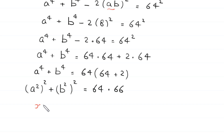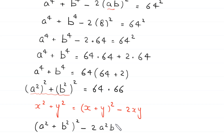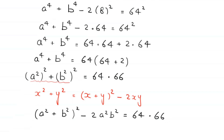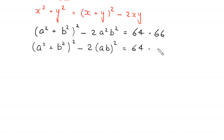Now by using the algebraic identity x squared plus y squared equals x plus y whole squared minus 2xy, this a to the power 4 plus b to the power 4 — written as a squared whole squared plus b squared whole squared — becomes a squared plus b squared whole squared minus 2a squared b squared, which equals 64 times 66.